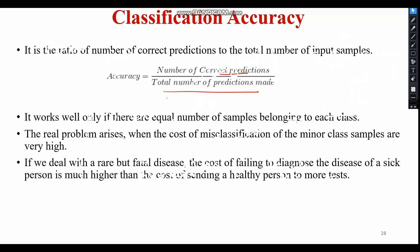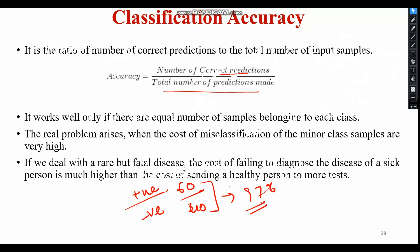To implement the accuracy metric, we can compare the true and predicted values in a loop, or use inbuilt libraries — we need to import the accuracy score to evaluate the model. Although this metric is very simple to understand and implement, it is suitable only for cases when an equal number of samples belong to each class. It is good to use the accuracy metric when the target variable classes are approximately balanced.